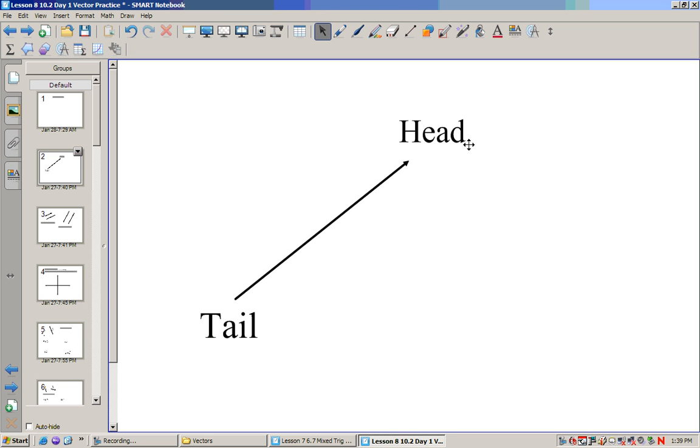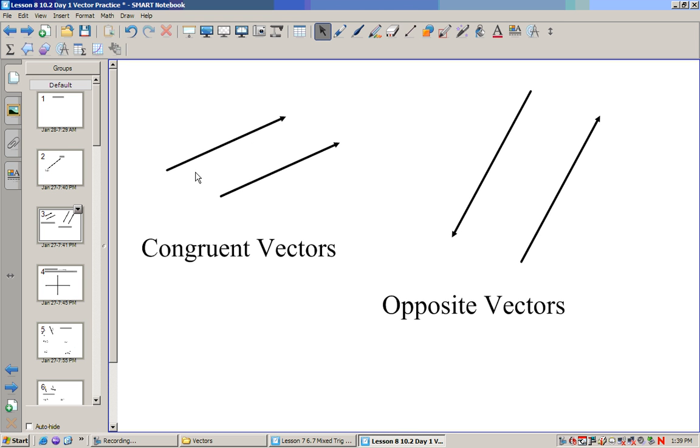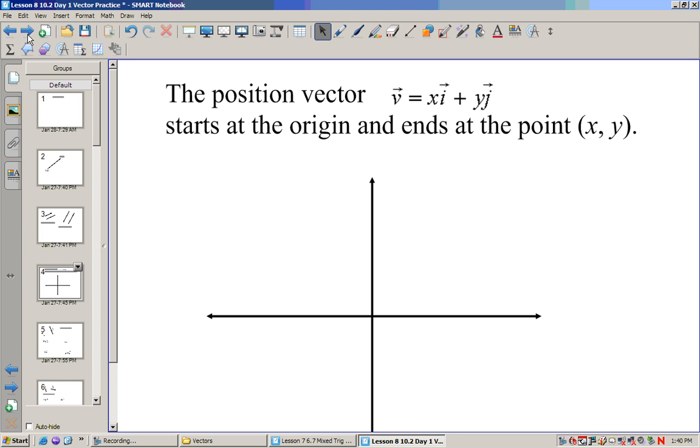This is the tail, and that's the head of the vector. We've already learned that. Congruent vectors are two vectors that are going in the same direction. Opposite vectors are vectors that are the same exact magnitude, but going in the opposite direction. A position vector is a vector where we have something xi plus yj. This is a new word. We've seen it written, we've called it before, written in terms of its components.